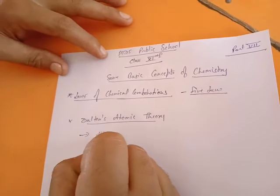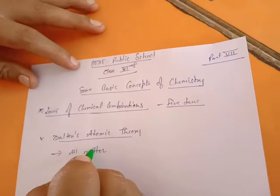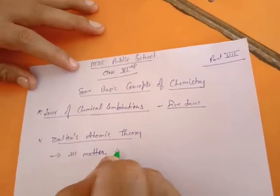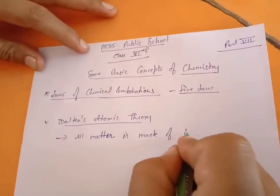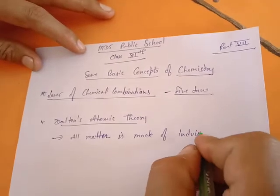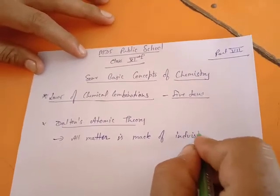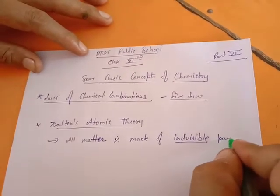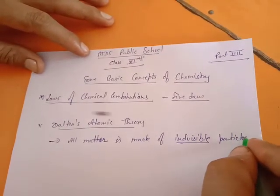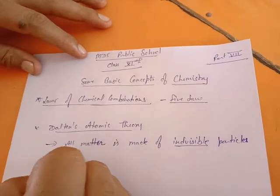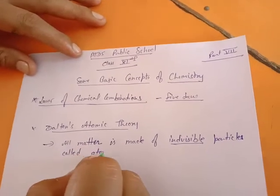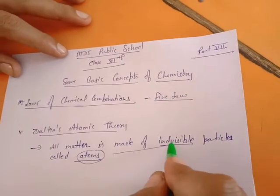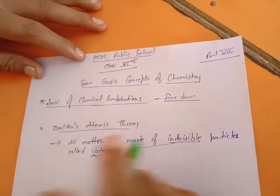The theory says that all matter is made up of individual particles called atoms. This is an important and noteworthy point — all matter is made up of individual particles called atoms. Dalton considered atoms to be indivisible, meaning they cannot be broken.